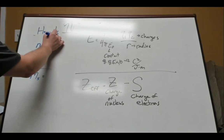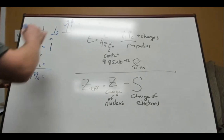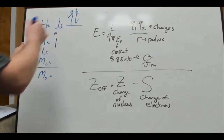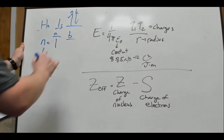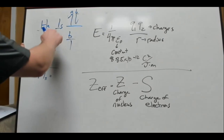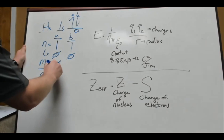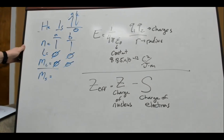The N for these electrons is this number here. For electron A, N equals one. For electron B, N is also one — they're in the same orbital. L, since it's an S orbital, is zero for both. The ML for S is also zero.